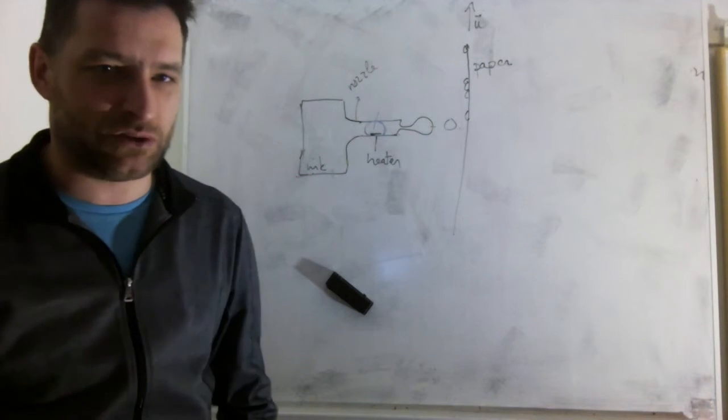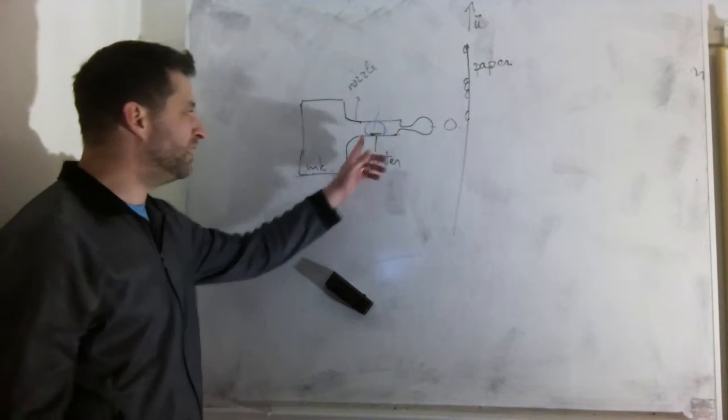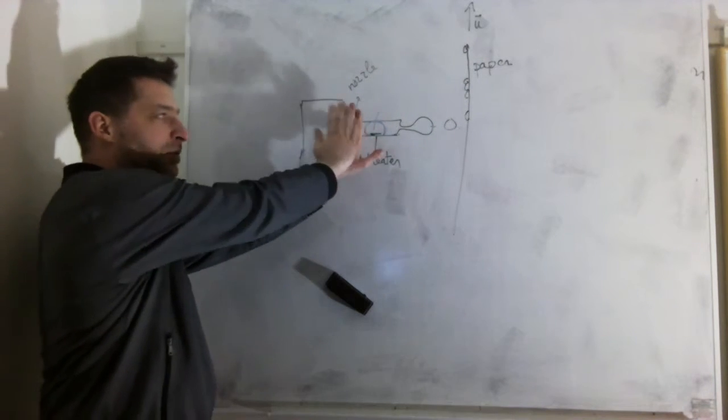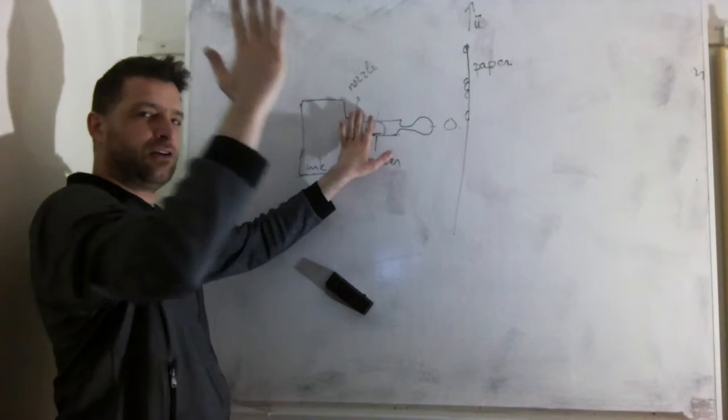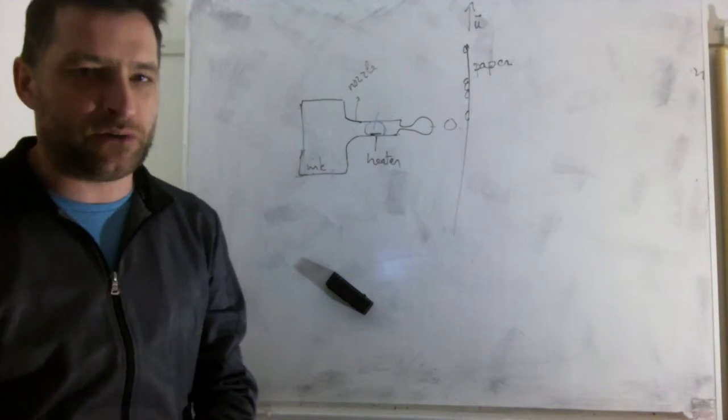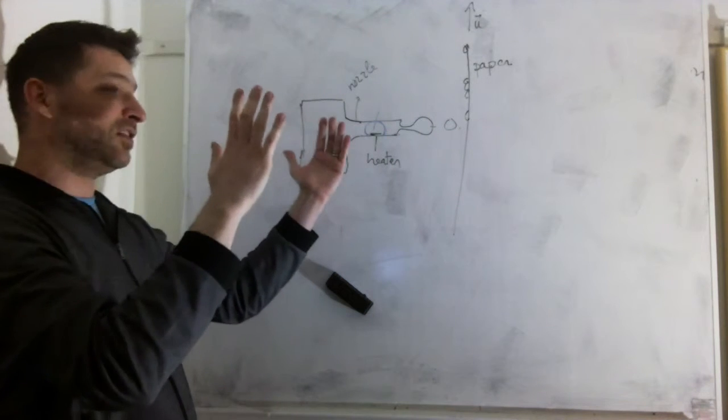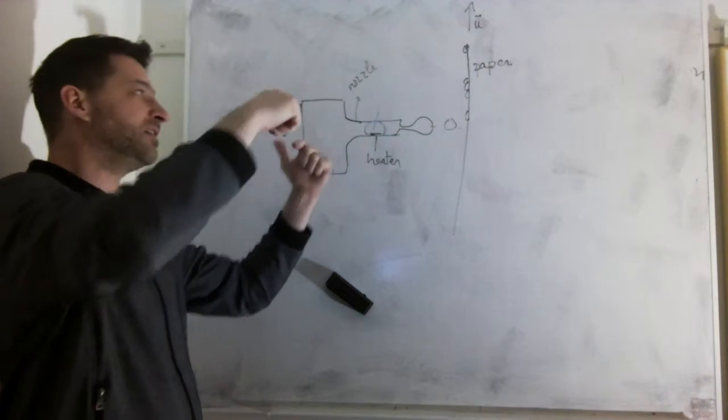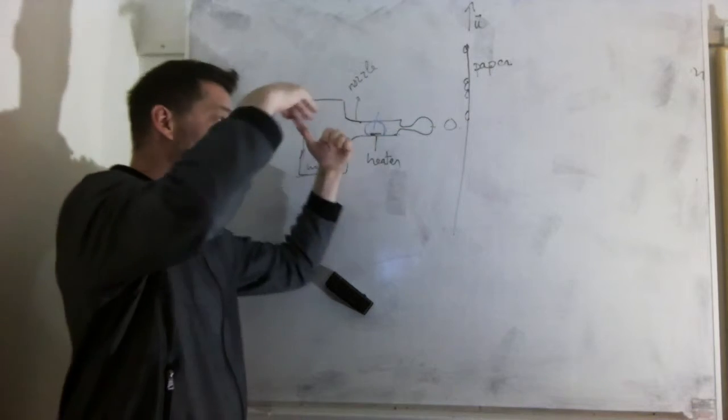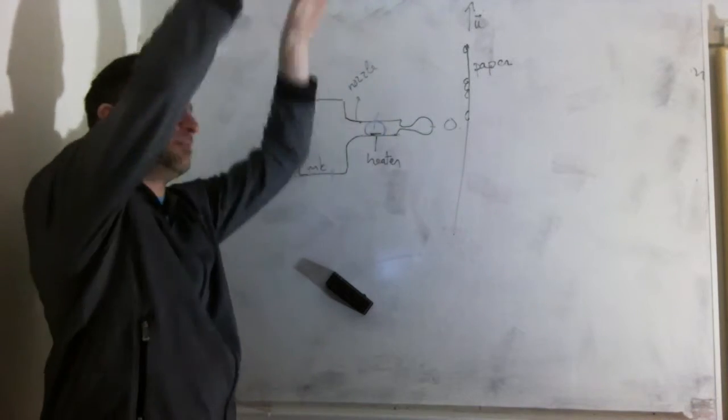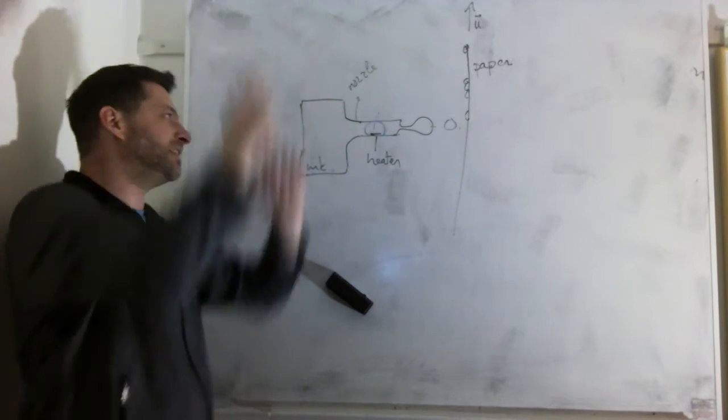Of course you don't have in a print head one nozzle. You have several. So out of plane, this is only one, but you have then a second and a third and a fourth out of plane. And typically you have 256 or 512 of these nozzles next to each other and shooting droplets. And as the paper comes, you write rows of text, rows of droplets at the same time.